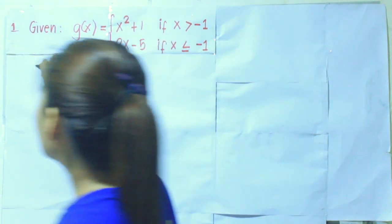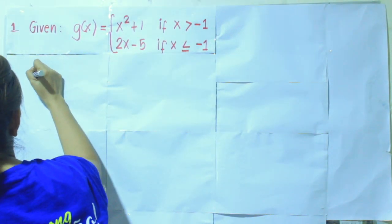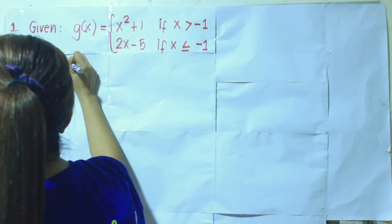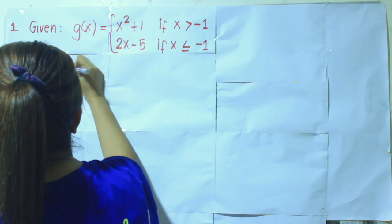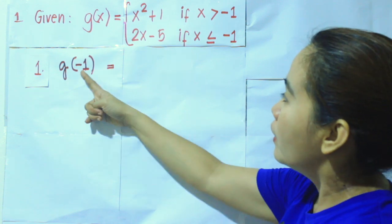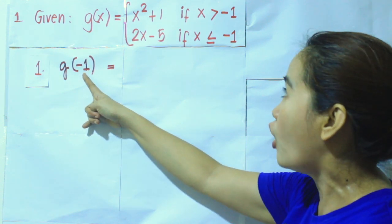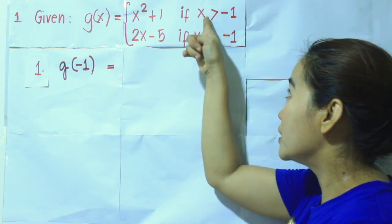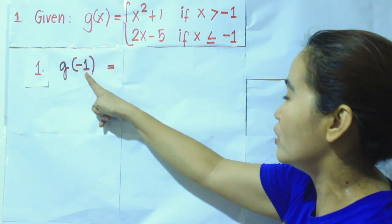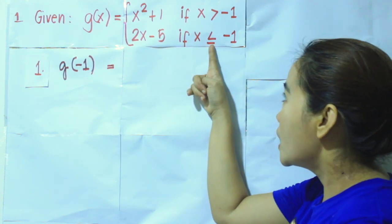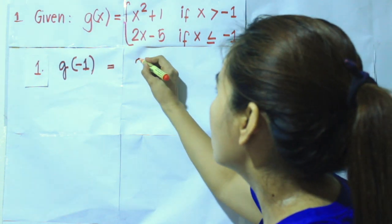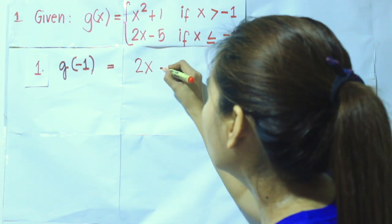What if you are asked to evaluate g of negative 1? We will first identify where does negative 1 fall — under which specified domain. We know that negative 1 is less than or equal to negative 1. Therefore, we will be using 2x minus 5.